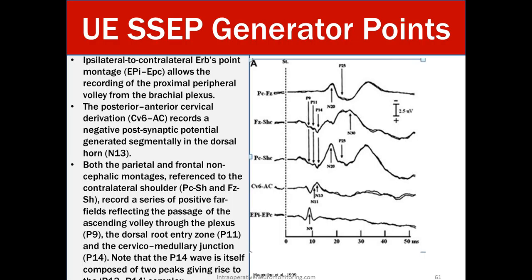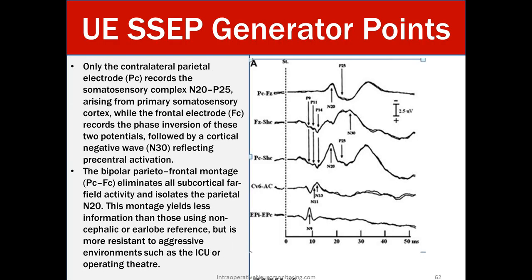Only the contralateral parietal electrode (PC) records the somatosensory complex — the N20 to P25 — arising from primary somatosensory cortex, while the frontal electrode (FC) records the phase inversion followed by the cortical negative N30 reflecting precentral activation. The bipolar parietal-frontal montage (PC to SC) eliminates all subcortical far-field activity and isolates the parietal N20. This montage yields less information than noncephalic or earlobe references, but is more resistant to hostile environments such as the ICU or operating theater.